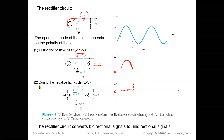During the negative half cycle when VI is less than zero, the current tends to flow in the reverse direction, so the diode is reverse biased. The diode is replaced by an open circuit.